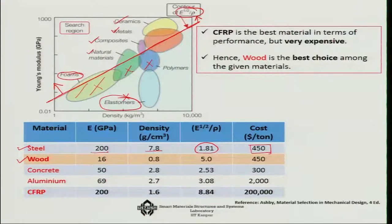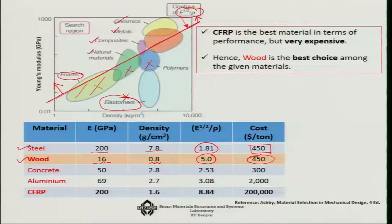Let us look at wood. A reasonable quality of wood has modulus of elasticity about 16, density 0.8, less than water, very light. I get a high factor, square root of E by rho is 5, much much higher than steel at about 450 dollars. No wonder for many traditional applications, even today if you look at the chariots of Jagannath, it is made of wood. Wood is a very good choice, better than steel because it is light.